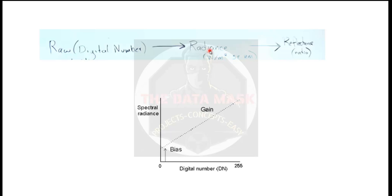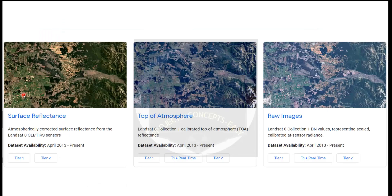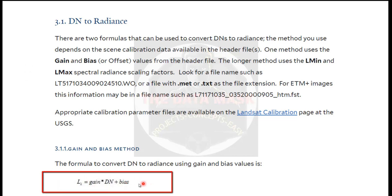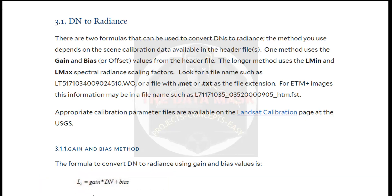It is found that there exists a linear relationship between conversion of DN number and the radiance, that is by gain and bias. How to convert raw data to the radiance value? Since we are taking the example of satellite imagery, put the gain and bias in this formula y = mx + c, where x is the DN value and y is the radiance.